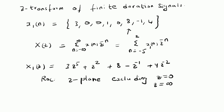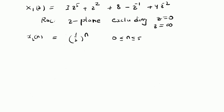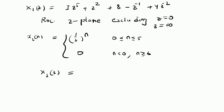Now let us look at another example. X2 of n is given by 1 by 2 power n for values between 0 and 5, and it is equal to 0 for all other values — that is, for n less than 0 and n greater than or equal to 6. So within this window from 0 to 5, the value is 1 by 2 power n. Therefore, X2 of Z is given by summation from n equal to 0 to 5 of 1 by 2 power n times Z power minus n.